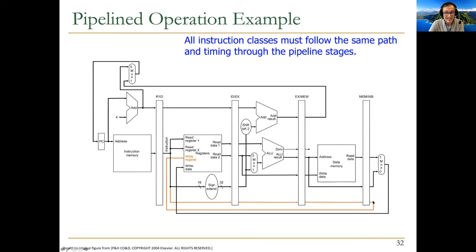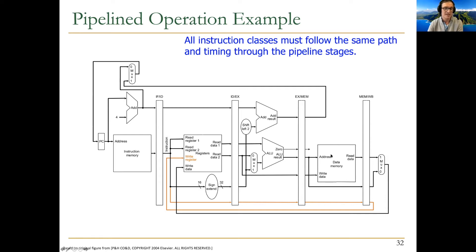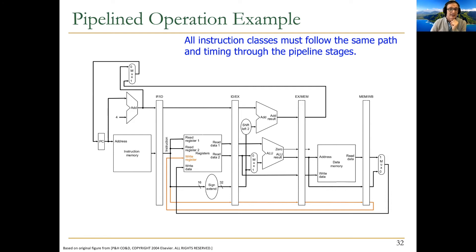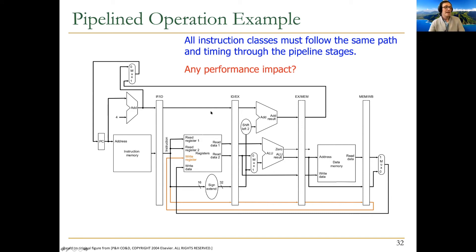The write register value must be latched and propagated through the pipeline so it's available at write-back to correctly index into the register file. Writing to data memory from a store instruction is a separate issue we'll discuss later, and we need to be careful about when to report results to software — related to precise exceptions, which we'll cover in a later lecture. Also, all instruction classes must follow the same path and timing, which has performance implications — we're making an add instruction follow the full pipeline path even though it doesn't need all stages.